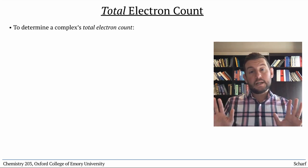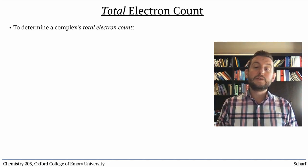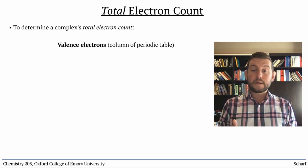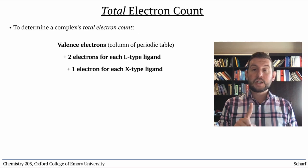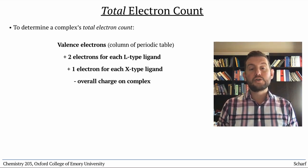Using my method, which is the one most commonly used in the US, we simply take the number of valence electrons for the metal straight off the periodic table, add two electrons for each L-type ligand, and one electron for each X-type ligand, and subtract the overall charge on the complex.